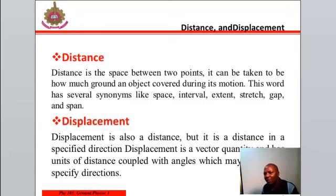2. Displacement. Displacement is also a distance, but it is a distance in a specific direction. Displacement is a vector quantity and has units of distance coupled with angles which may be used to specify directions.